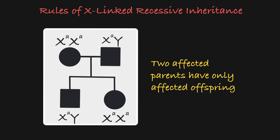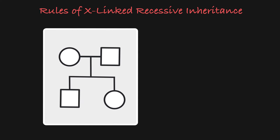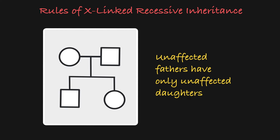From the other angle, you can see that an unaffected father cannot have an affected daughter. If the father is unaffected, he will pass on the dominant X-allele to his daughters, who then must be unaffected.